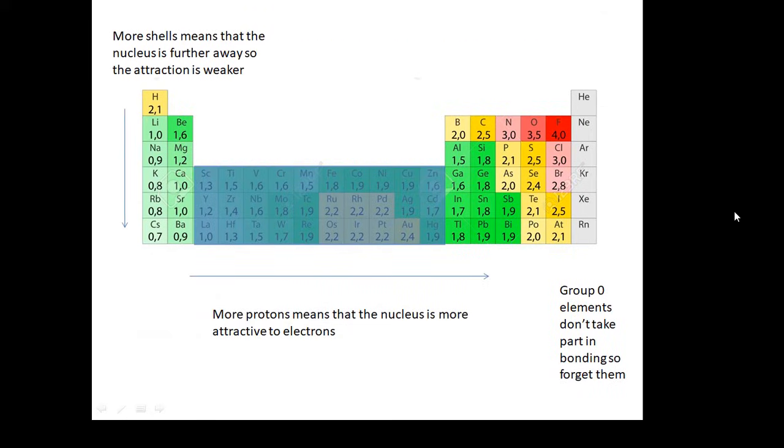Don't worry about the transition elements. We'll just worry about groups one, two, up to group seven, really. We don't worry about group zero because they don't form any bonds. So forget about them. We're not interested in them. And basically, what's going to happen is that the more protons an atom has, then the bigger its electronegativity will be. So if we work our way across a period, for instance, lithium, beryllium, boron, carbon, nitrogen, oxygen, fluorine, you see that the electronegativity gets bigger. And that's because the number of protons is increasing.